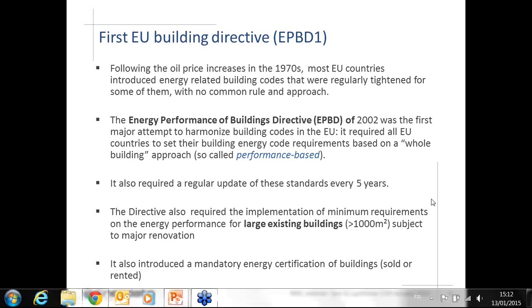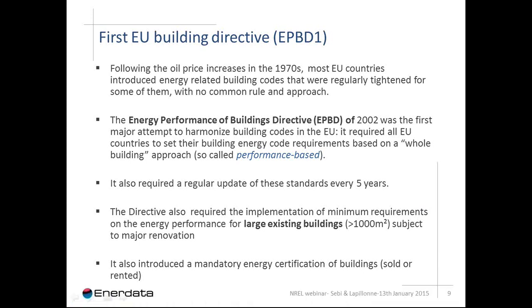The EPBD also requires a regular update of standards every five years, because many countries had one standard but never improved it. Innovatively, it also looked at renovation — the first real attempt to create standards for renovation of large existing buildings above 1,000 square meters, requiring them to meet standards based on new buildings. An additional innovative aspect was the introduction of mandatory energy certification of buildings, similar to what exists for appliances, allowing characterization of building efficiency — typically using letter grades A, B, C or absolute consumption values in kWh per square meter. This is mandatory for all buildings that are sold or rented.